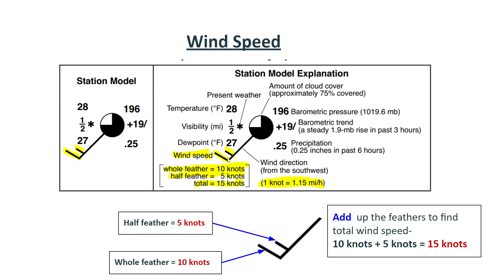Now the bigger line right here is called a whole feather and the bigger line represents 10 knots. The smaller line right here is called a half feather and the smaller line represents 5 knots. And all you need to do to figure out what the wind speed is, is add up the knots.